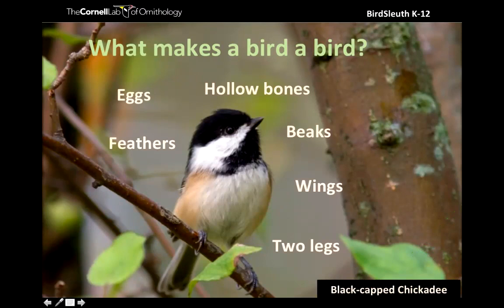We've got hollow bones - or as some people pointed out, they're not exactly hollow. They have struts or supports in them that balance strength and light weight. Hard-shelled eggs, feathers, beaks, wings. And the thing we missed: two legs - they're bipedal. If something has feathers, as Jessica pointed out, it is in fact a bird - if it's an extant species. Feathers are the most uniquely defining feature.